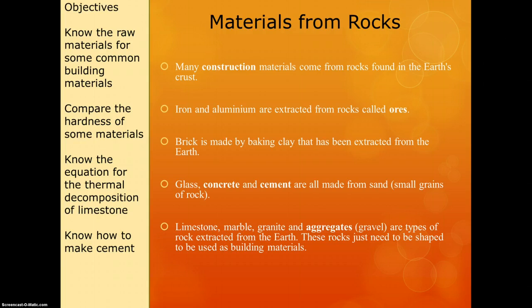Let's start with materials that we get from rocks. Most construction materials come from rocks — for instance, iron and aluminium are extracted from their ores, which is one of the key words we need to know. Brick is made from clay, which also comes from the earth. Glass, concrete and cement are made from sand, and then limestone, marble, granite and aggregates are different types of rock extracted from the earth — we just change the shape of them to use them. We need to be able to link the building material to its raw material.